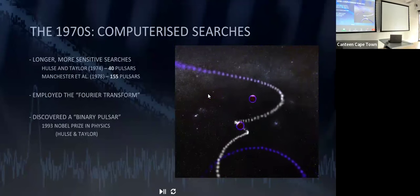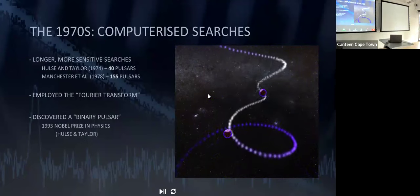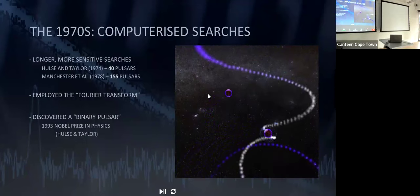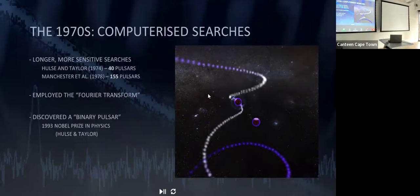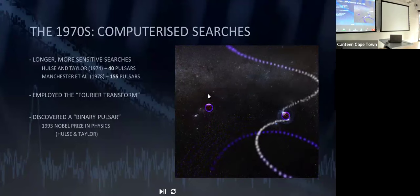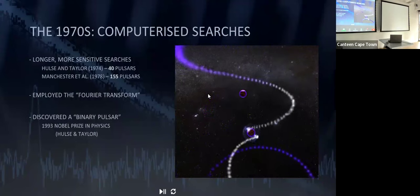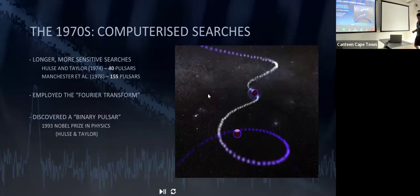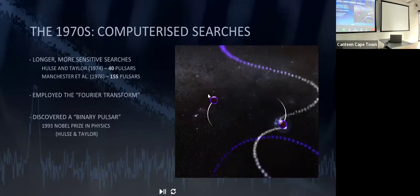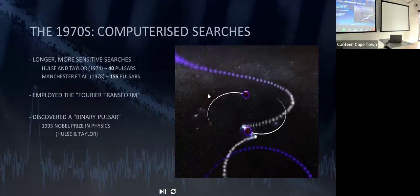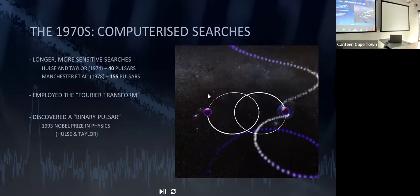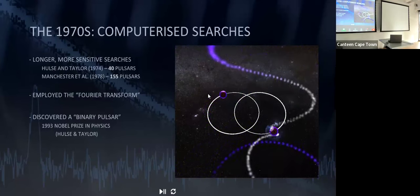In the 1970s, pulsars were discovered primarily using chart recorders. Then Joe Taylor, a UMass professor, did one of the first digital surveys for pulsars, digitizing data from different frequency channels and finding about 40 pulsars — including one going around some mysterious object in an elliptical orbit, with the two stars going around each other every 7.75 hours. Back in 1984 my supervisor gave me this object to study for my honors degree, and I've been working on pulsars ever since.